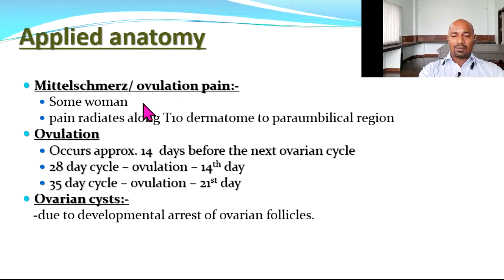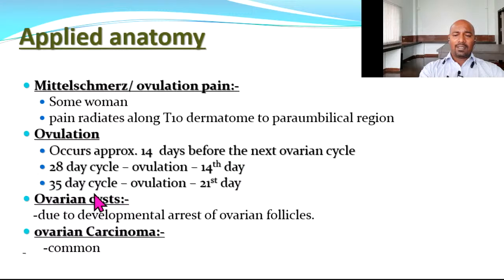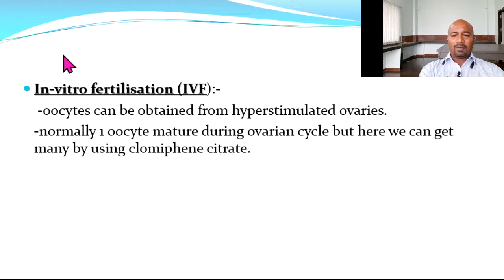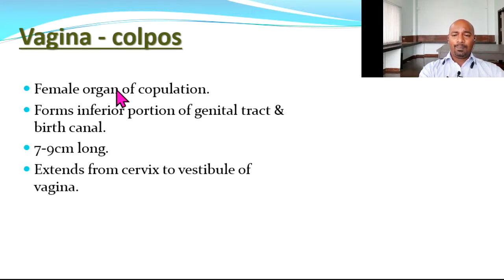Mittelschmerz or ovulation pain refers to the pain felt due to rupture of the ovarian surface to release the ovum — generally felt around the umbilicus or in the central part of the back; it is not very severe but some people can experience it. Ovulation occurs approximately 14 days before the next ovarian cycle — in a 28-day cycle on day 14, in a 35-day cycle on day 21. Ovarian cysts develop due to developmental arrest of ovarian follicles. Carcinoma of the ovary is quite common in older individuals. Assisted reproductive technologies include in vitro fertilization or IVF.